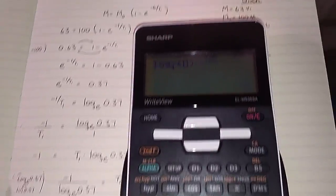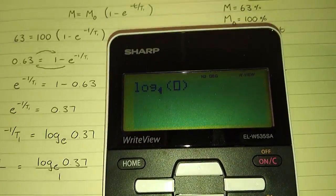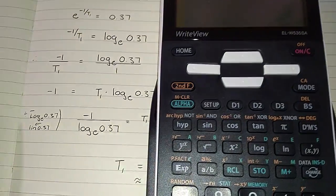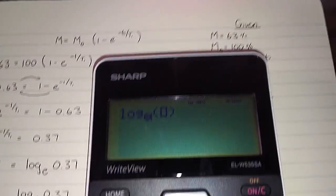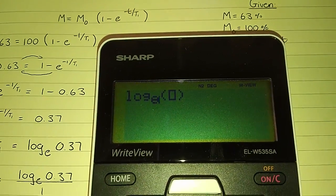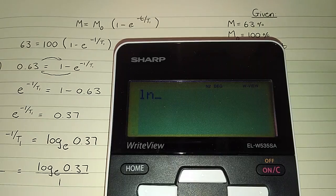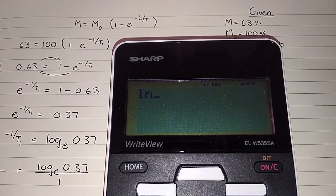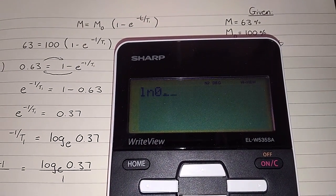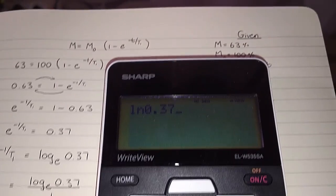So in other words, in order to get the log base e, you'd have to go through the whole process of going second function, that log over there, and then you would actually have to go alpha and select the small letter e in order to get base e. But to do the ln thing is very, very simple. You simply go ln, that automatically means log base e, and then you just put in the 0.37.